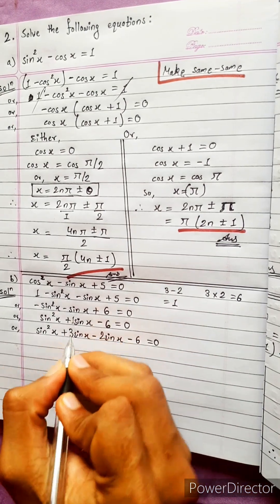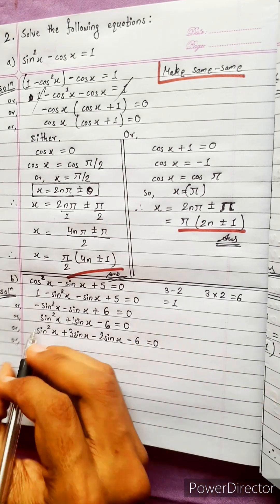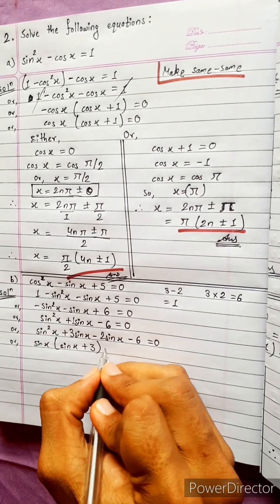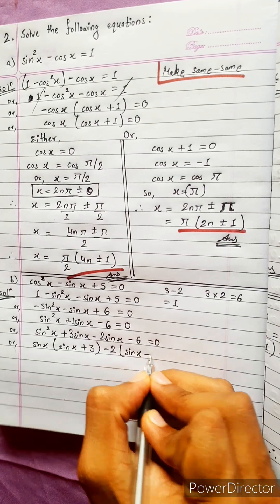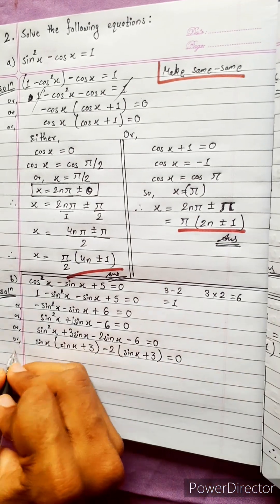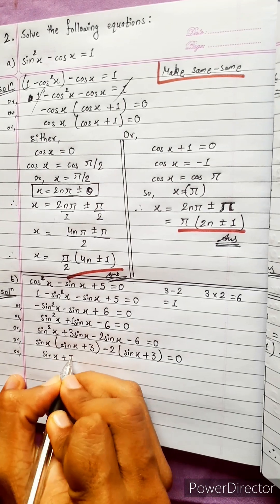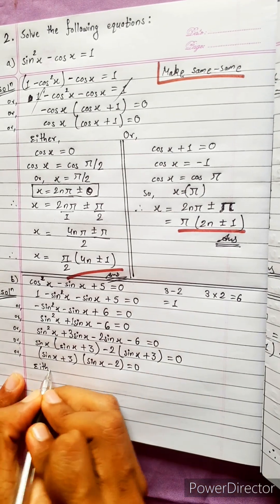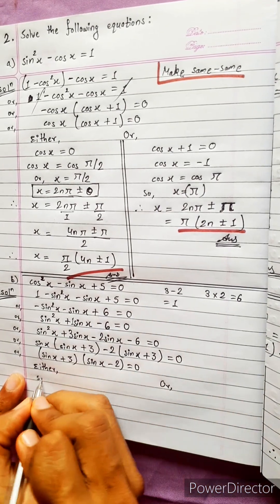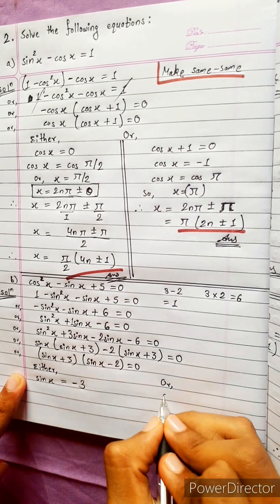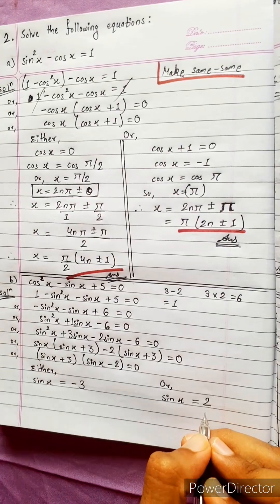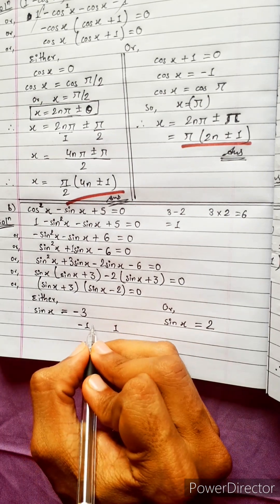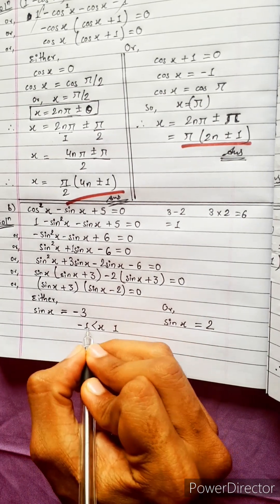So: sin x plus 3 times sin x minus 2 equals 0. Either sin x plus 3 equals 0 or sin x minus 2 equals 0, giving sin x equals minus 3 or sin x equals plus 2.